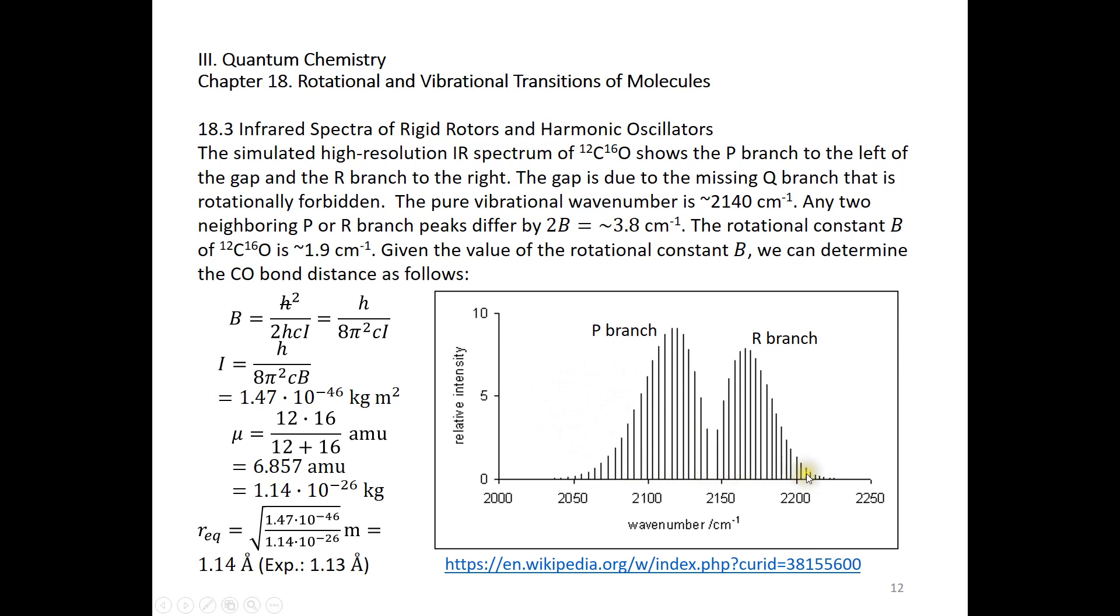Between any two adjacent R branch peaks, the gap is 2B. Same between two adjacent P branches, it's also 2B. Just in the middle, we have a wider gap of 4B. By looking at this infrared spectrum of carbon monoxide, we can measure the gap between two adjacent P branch peaks or two adjacent R branch peaks, and that's going to be 2B. After our measurement, you can actually measure maybe 10 gaps together. It's roughly 38.